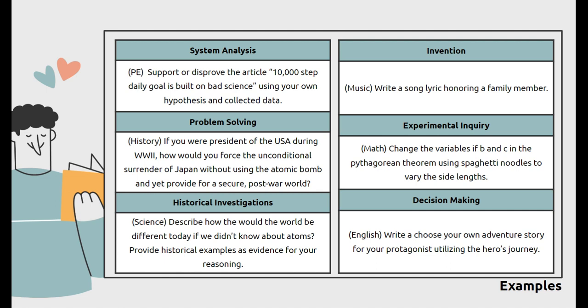Here are various examples of each type of hypotheses in action. Now, I try to choose course-specific examples that may not easily fit into a hypothesis type. For example, instead of experimental inquiry for science, I chose historical investigations. As a science teacher, maybe I'll have my students describe how the world would be different today if they didn't know about atoms. And they have to provide historical examples as evidence for their reasoning. They have to think about what's going on. That if. They have to think about their possible reasons then. And they need to be able to explain it and come up with a reasoning on how they work together. And this is true for any of these types of hypotheses.